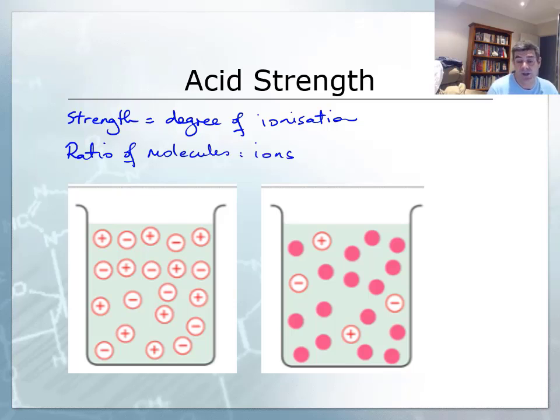If we think of it as the ratio of molecules to ions, then a low ratio—few molecules to many ions—means a strong solution. Many molecules to few ions means a weak solution.